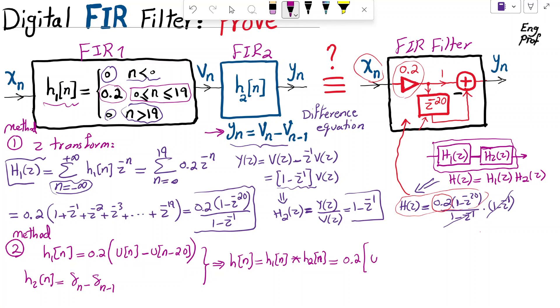So what we are doing is we are saying 0.2. It's a scalar. Let's keep it outside. That doesn't change anything. And allow me, instead of writing U of N, I'm going to write U N. And instead of U of N minus 20, I'm going to just show it U sub N minus 20. That's easier. So I have U of N minus U of N minus 20 convolved with delta N minus delta N minus 1.